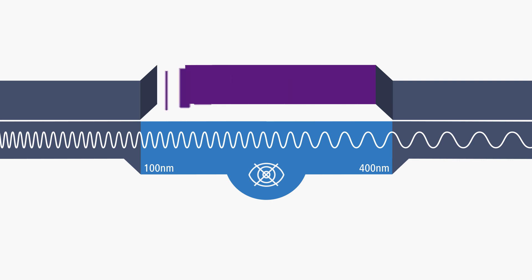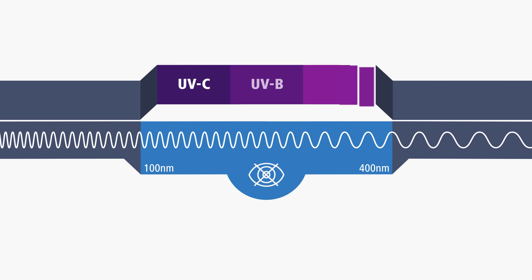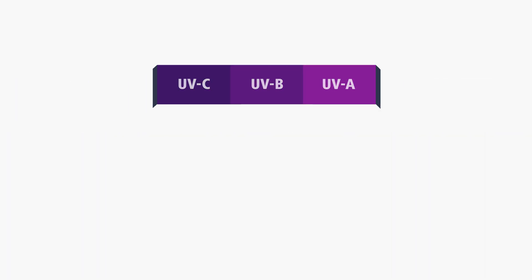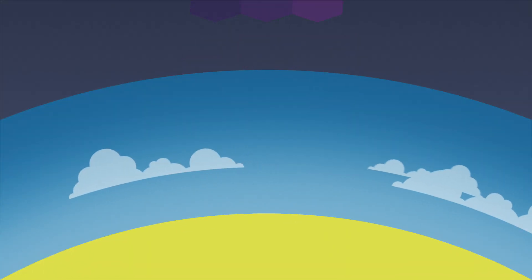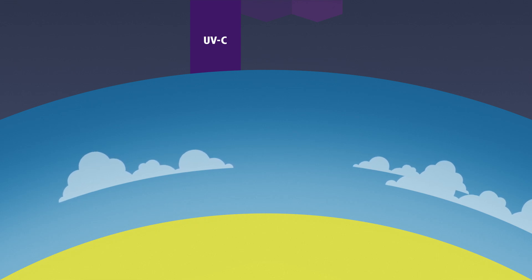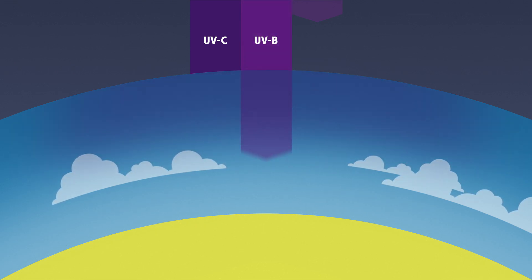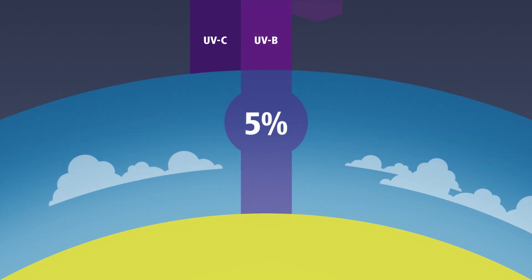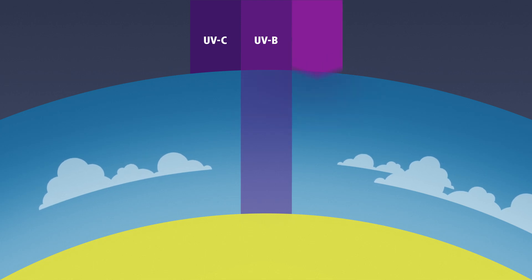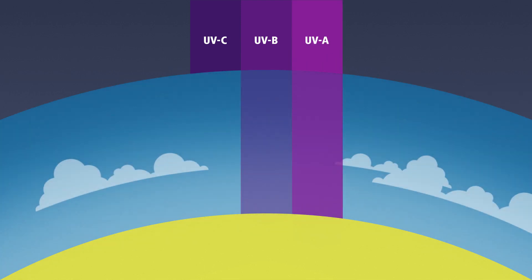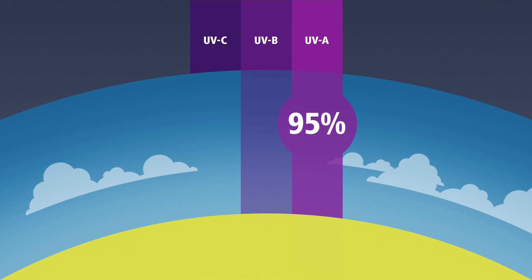UV radiation is classified by wavelength into three categories. UV-C radiation gets trapped in the ozone layer of the atmosphere. But 5% of UV-B radiation can get through, and up to 95% of UV-A radiation can get through without anything stopping it.